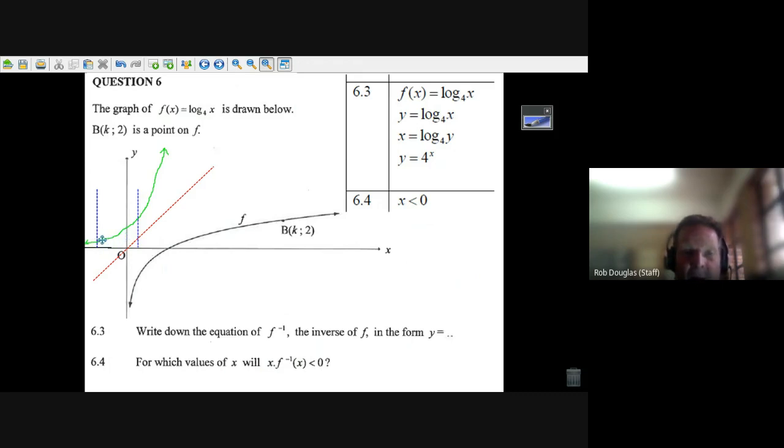Now, for which values of x will x multiplied by the f of x value give you a negative number? Let's check down here. Say at minus one, minus one times the y value, which is a quarter, that's minus a quarter. Hey, that's less than zero, so it works.